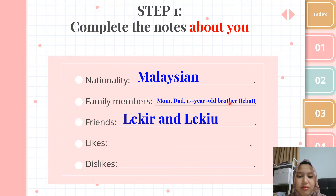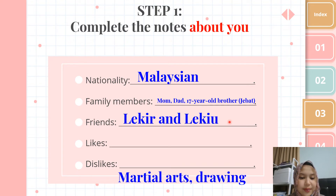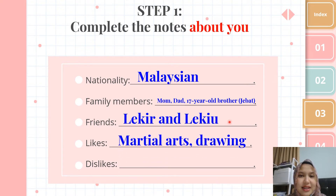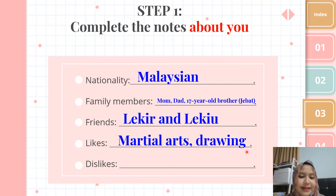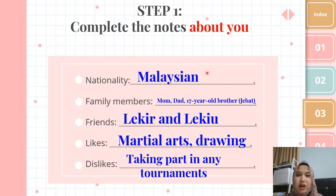Then write down your friends — the names of your friends. This person's friends are Leke and Lekew. Then look at the likes: this person likes martial arts and drawing. And for dislikes, there's one — taking part in any tournament. So just follow this example. Write down your nationality; if you are Malaysian, then it's Malaysian, same as teacher.